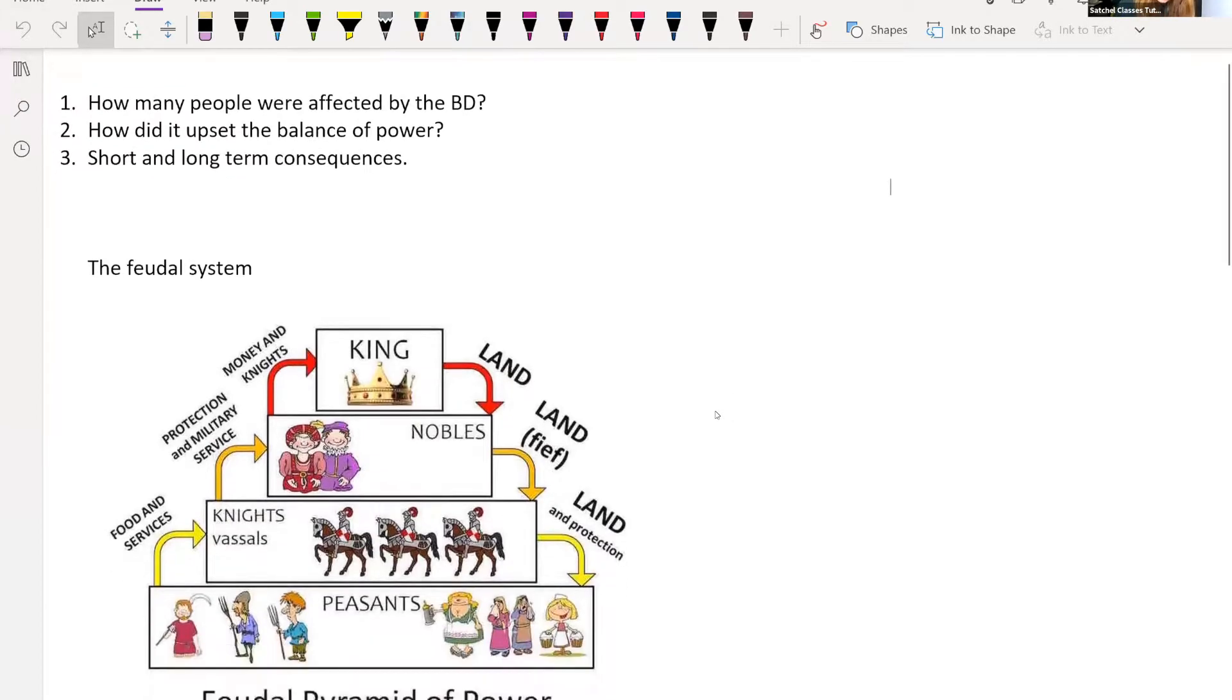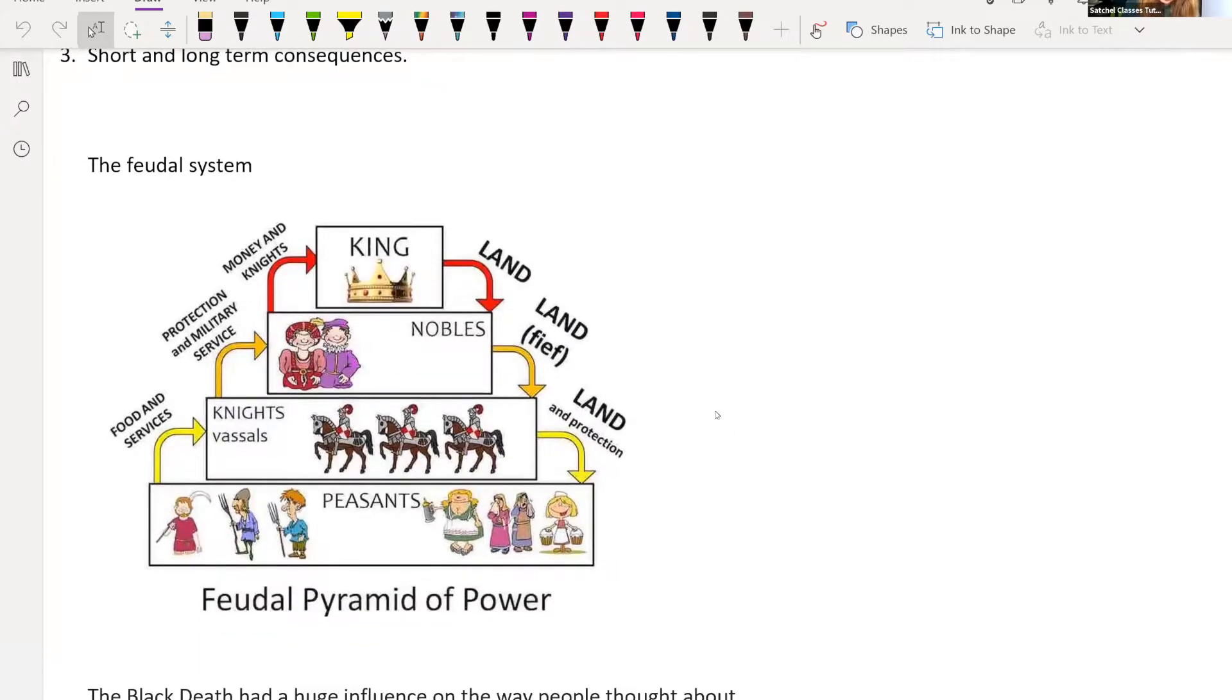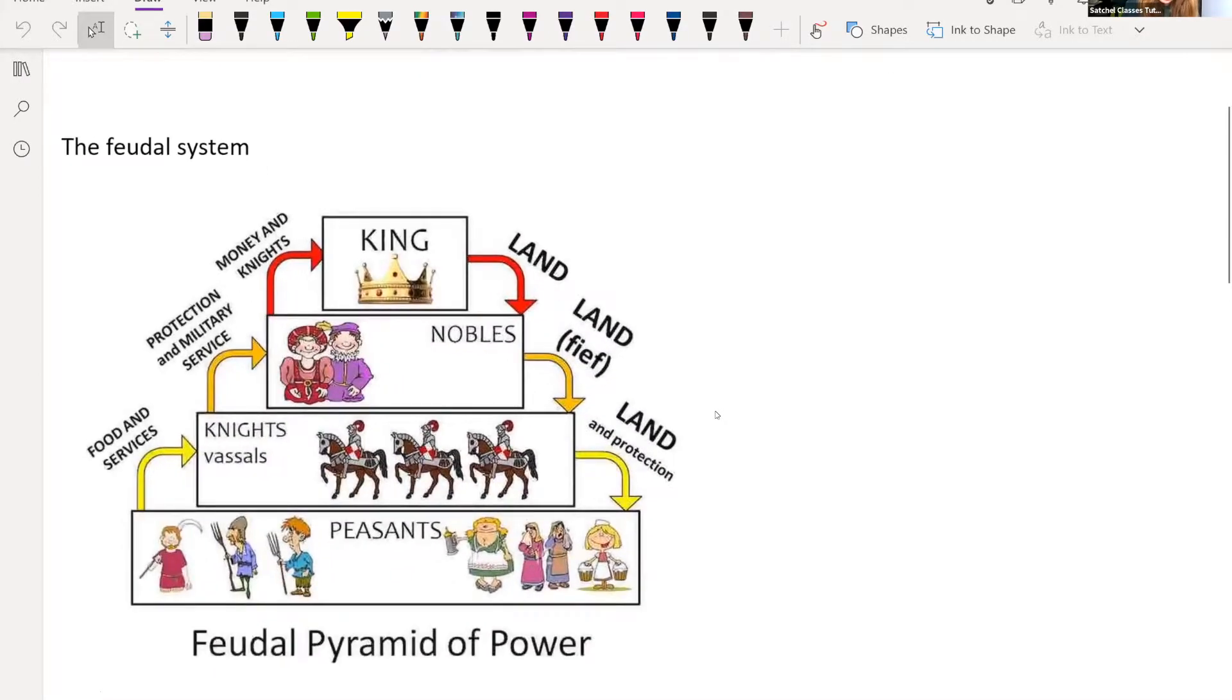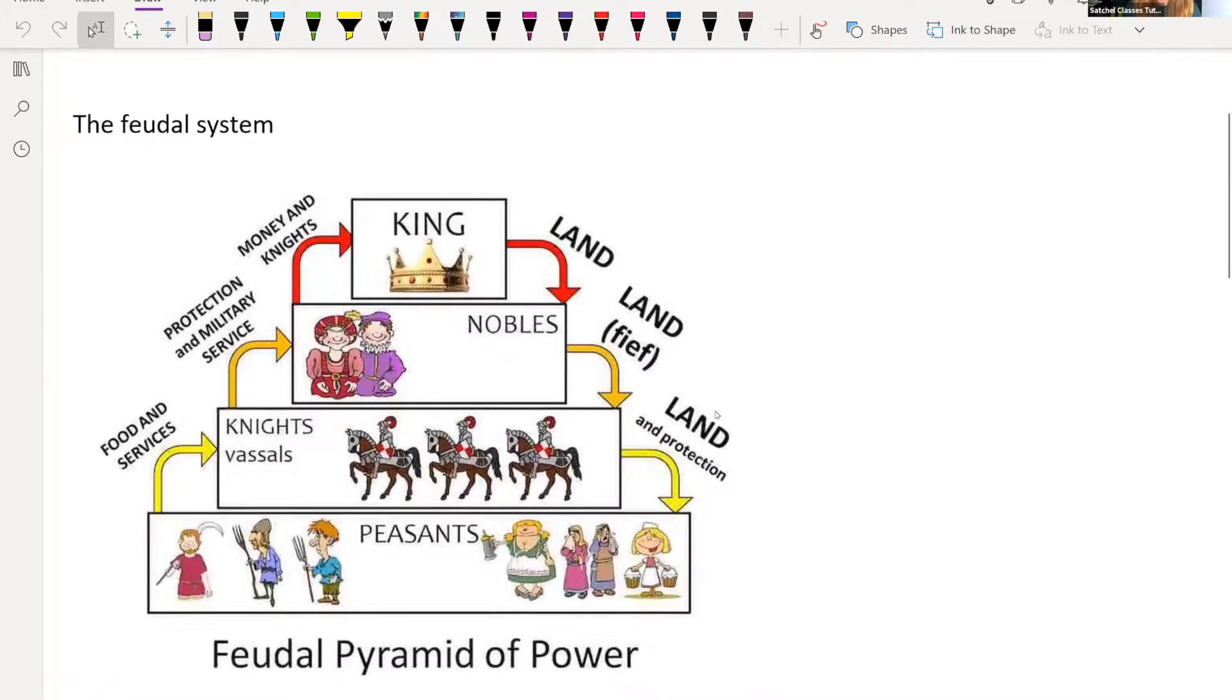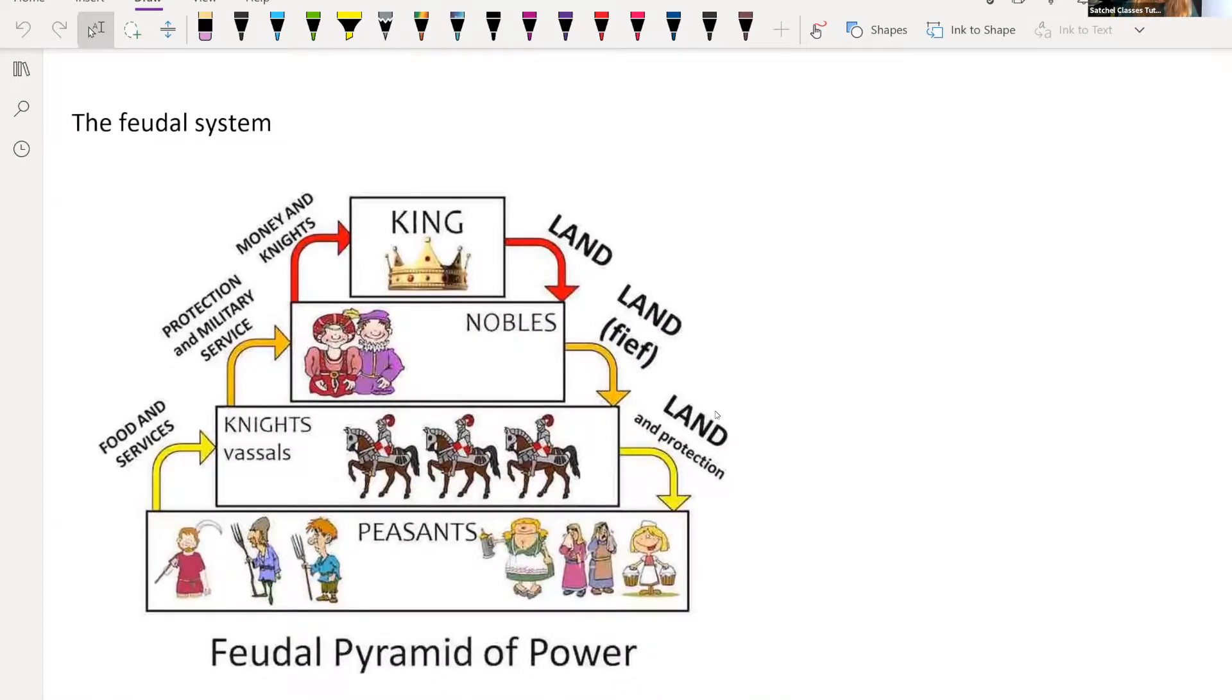Let's start with the feudal system. You may have come across the feudal system when you were looking at the Battle of Hastings and the Norman Conquest. This is something that William the Conqueror brought in when he came over from France and conquered England. The idea of the feudal system was this pyramid of power, to keep the social order, to make sure that everybody knows their place, and there's a very obvious power structure within the country.